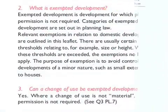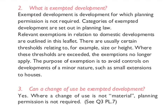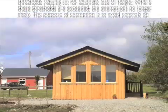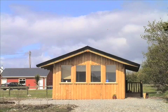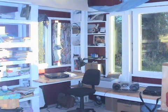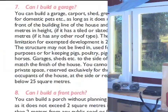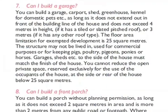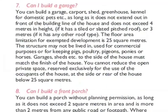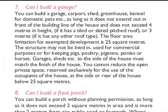Exempted development is designed to facilitate small-scale works within the boundaries of existing properties — for example, the building of a shed or a studio behind an existing house. Generally, there are limits to the floor area, the height, position and the use to which such small buildings can be put.